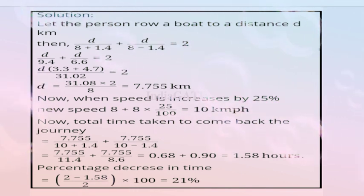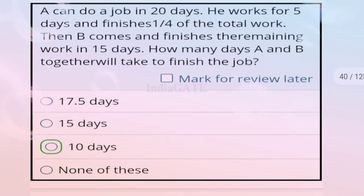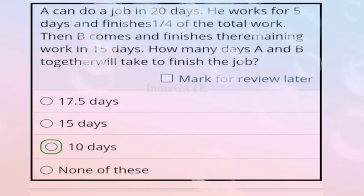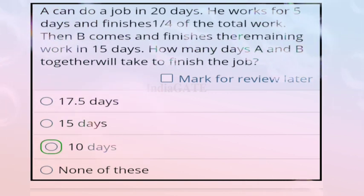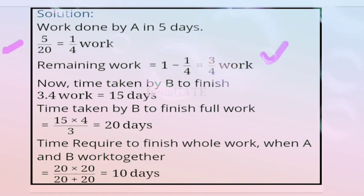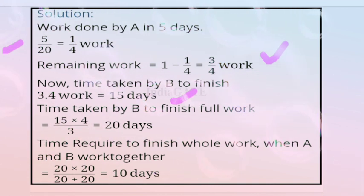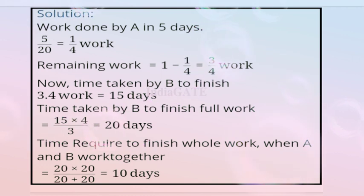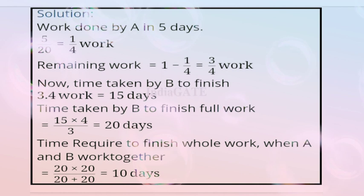Next question: A can do a job in 20 days. He works for 5 days and finishes 1/4 of the total work. Then B comes and finishes the remaining work in 15 days. How many days will A and B together take? Correct answer is option C, 10 days. B's full work time = 15 × 4/3 = 20 days. Together: 20 × 20/(20+20) = 10 days.